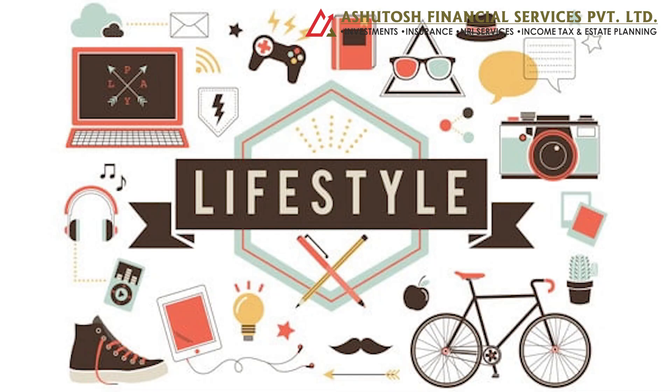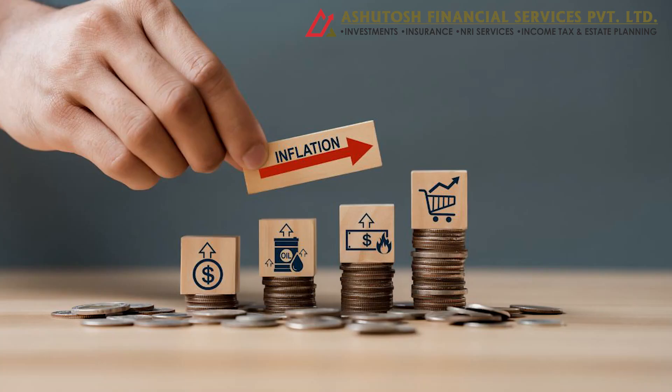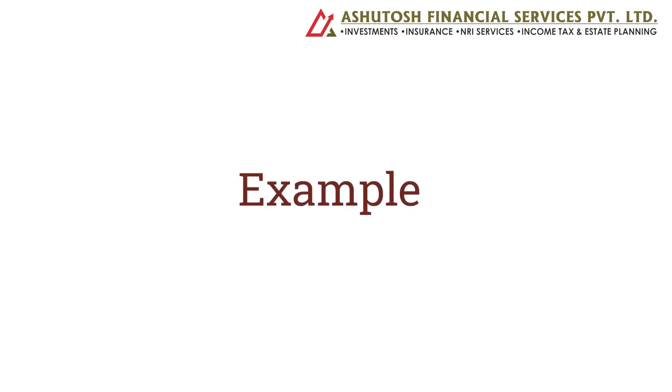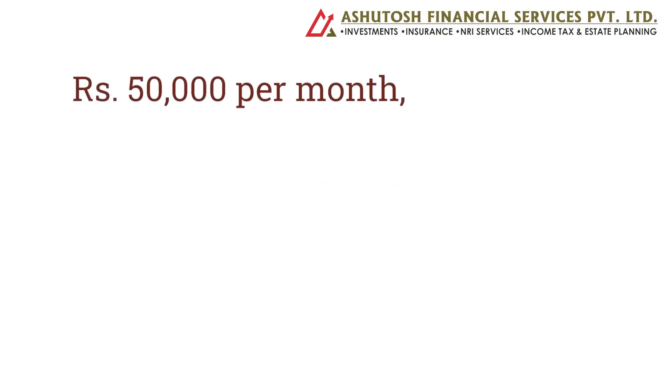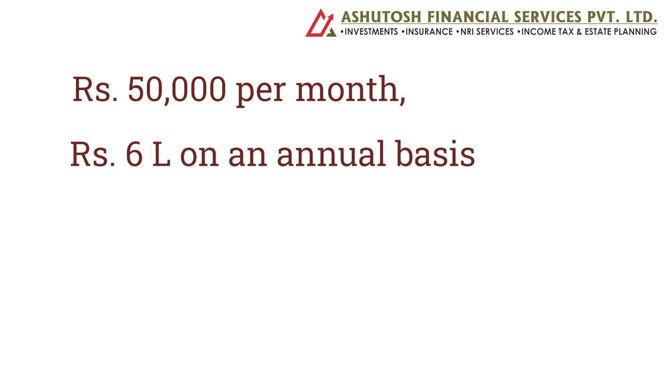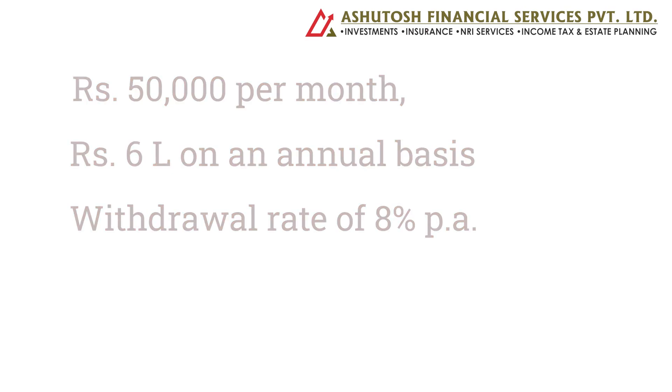Step number one: determining the corpus size. The first step is to determine the size of the corpus. This depends on the monthly cash flow requirement that the person requires, considering the kind of lifestyle he or she is aspiring post-retirement, also factoring inflation. For example, if a person requires a monthly cash flow of ₹50,000, which amounts to ₹6 lakhs annually, then considering a withdrawal rate of 8% per annum — amongst the highest bank fixed deposit rates offered today — the corpus size would be ₹75 lakhs. Hence, ₹75 lakhs at 8% withdrawal would yield ₹6 lakhs annually.